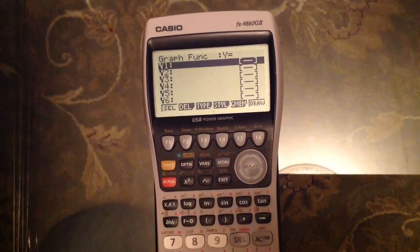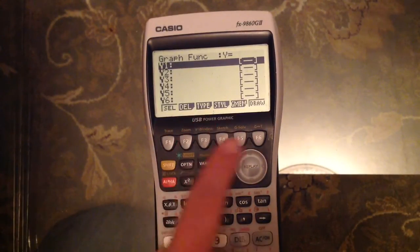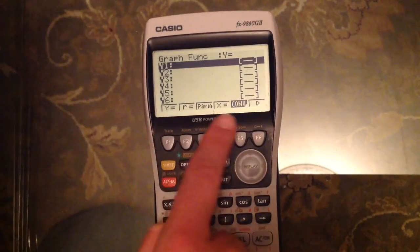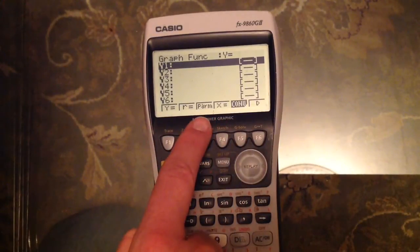Now, we need to change the type of graph that it's drawing. Go to type, press F3. You'll see various different options, and of course we have parametric. So pressing that one.